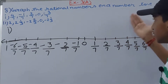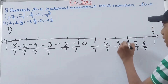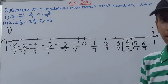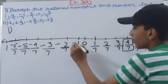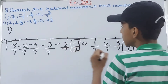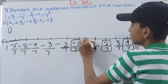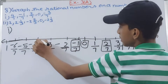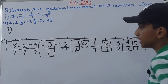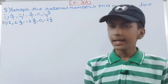Now we graph the given rational numbers. 4 upon 7 is over here. Minus 1 upon 7 is over here. 2 upon 7 is over here. 0 is here. And minus 3 upon 7 is here. That completes Part A.